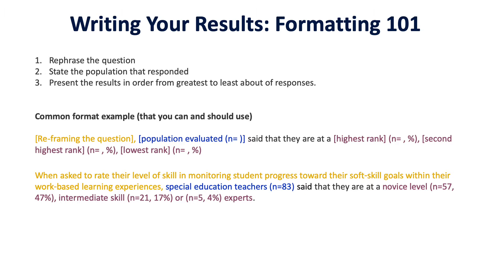What you want to do is rephrase the question, state the population that responded — whether that's teachers, job coaches, agency staff, paraprofessionals, administrators, mentors, young people, or family members — and then present the results in order from greatest to least.